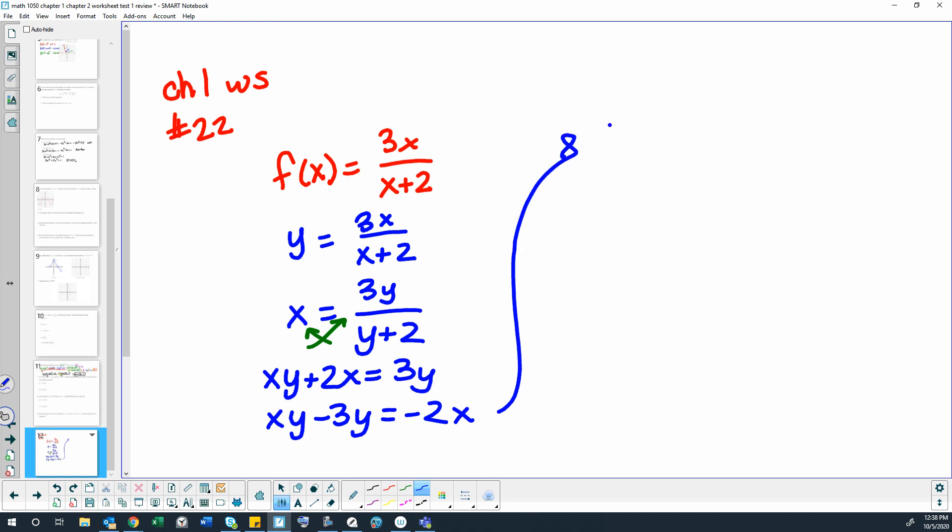Continuing this one up here, so factor out a y. So again, we get x minus 3 equals negative 2x, and then we divide both sides by x minus 3.